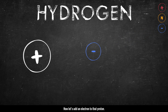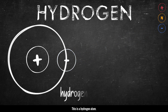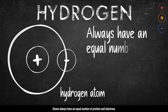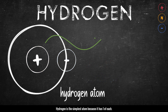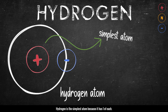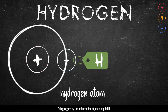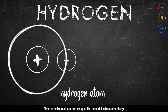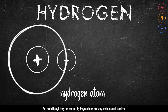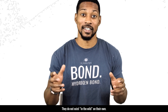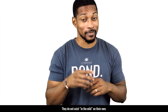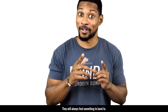Now, let's add an electron to that proton. This is a hydrogen atom. Atoms always have an equal number of protons and electrons. Hydrogen is the simplest atom because it has one of each. This goes by the abbreviation of a capital H. Since the protons and electrons are equal, that means it holds a neutral charge. But even though they are neutral, hydrogen atoms are very unstable and reactive. They do not exist in the wild on their own — they will always find something to bond to.